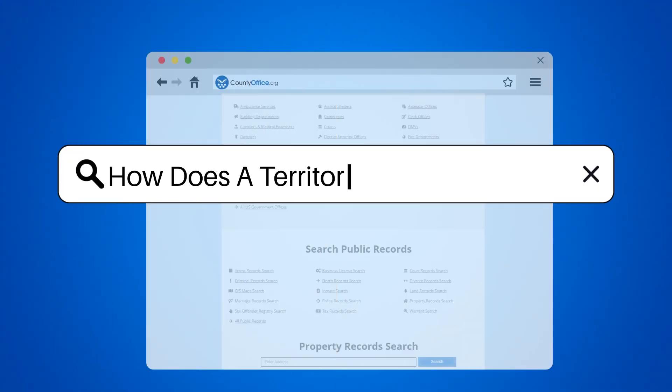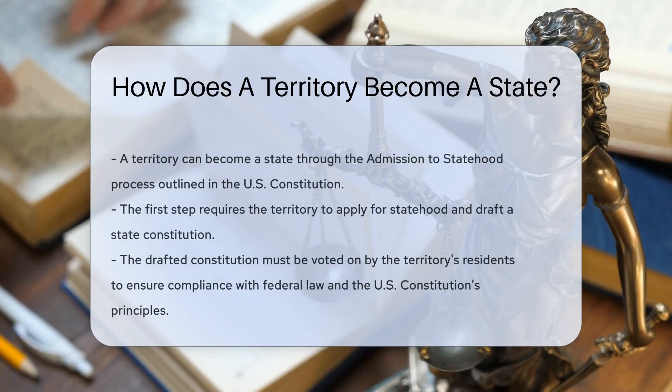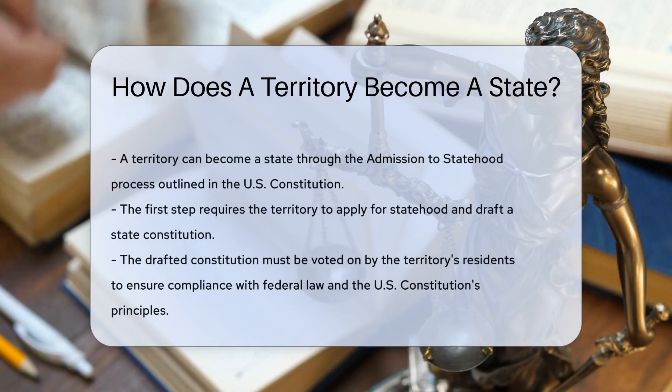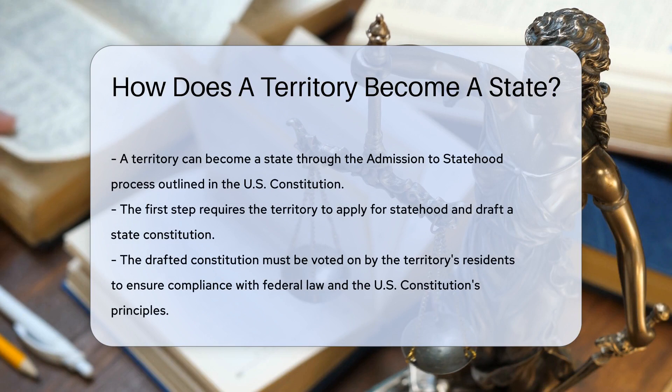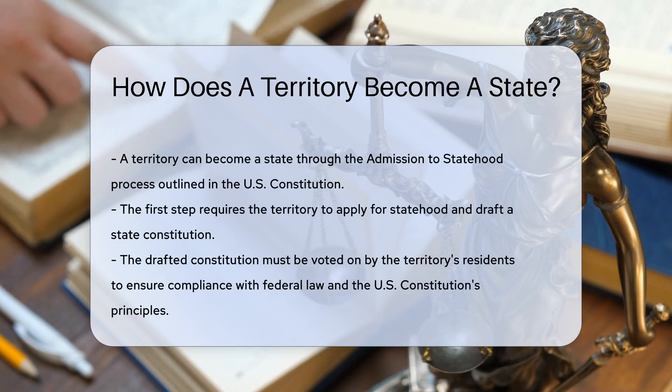How does a territory become a state? A territory can become a state through a process defined in the U.S. Constitution, known as the Admission to Statehood Process.